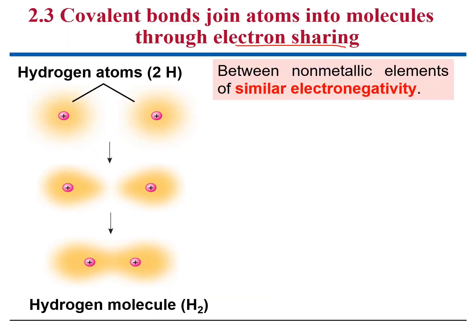Now we're going to move into covalent bonds, and I want you to remember that covalent bonds join atoms into molecules through electron sharing. Here you find an example of a covalent bond — a chemical bond between two hydrogen atoms. Covalent bonds take place between non-metallic elements with similar electronegativity. These two atoms of hydrogen have the same electronegativities, so they will create a covalent bond.